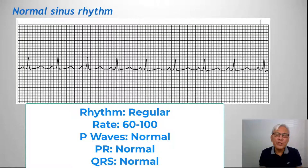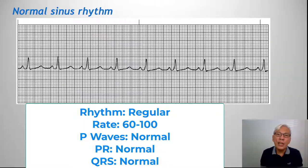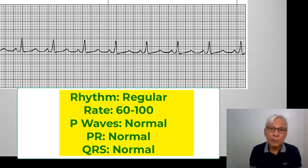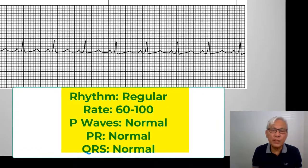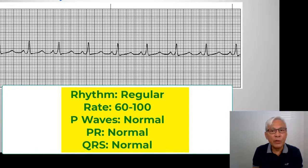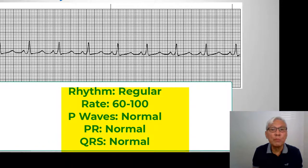Normal sinus rhythm is a rhythm that reflects the normal physiological function. The impulse originates from the sinus node and travels to the atria, to the AV node, to the bundle of His, to the bundle branches, and the Purkinje fibers in a normal pattern. This results in a regular rhythm. The rate would be 60 to 100 beats per minute, reflecting the inherent rate of the sinus node. The P waves, PR interval, and QRS complex will all be normal in duration.